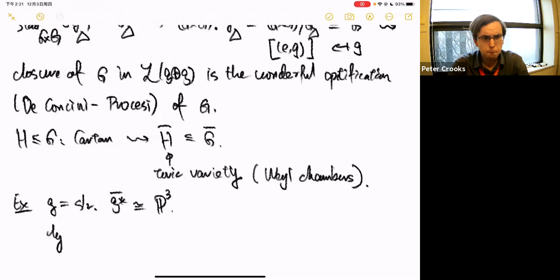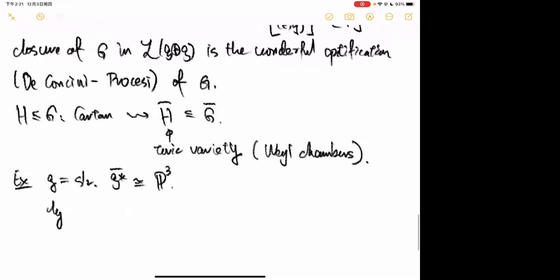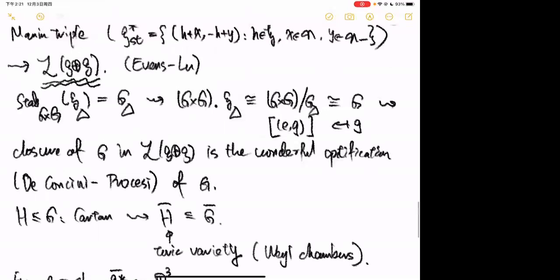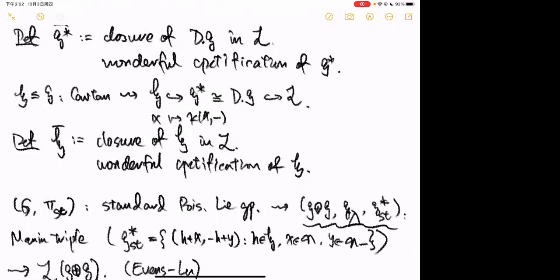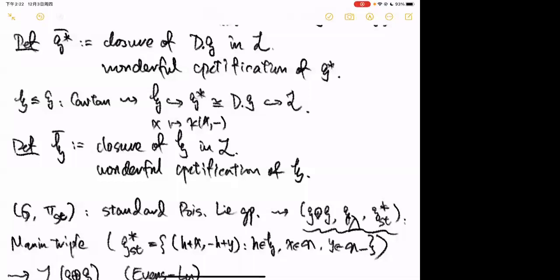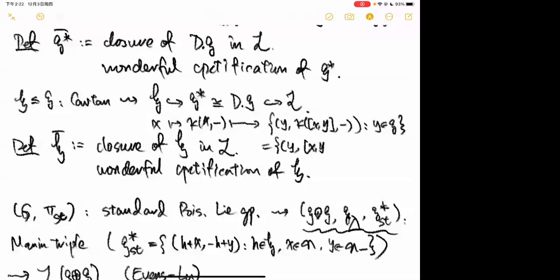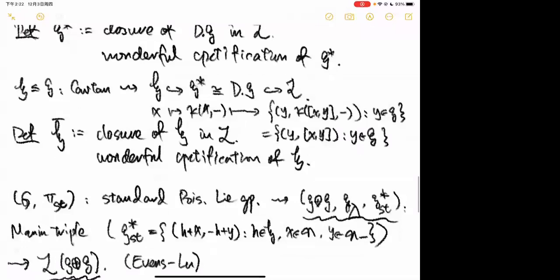Let's go back to the embedding of H into L. I told you how to embed G* into L. If you write it out, you see that x in H maps to the subalgebra {(y, κ(x, ·))|_y} = {(y, [x, y]) : y ∈ g}. I identify G* with g via the Killing form, so I write (y, [x, y]) for y in g.